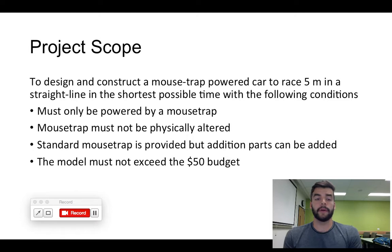So the project scope. This project had some conditions and constraints, and the most important of them was that the car needed to move in a straight line for five meters in the quickest time possible. Also, the mousetrap car could only be powered by the mousetrap, and the mousetrap cannot be altered, but you can add parts to the actual car. And also, we had a $50 budget and we could not go over that budget.